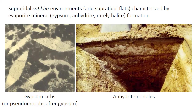Sometimes the supratidal part of a tidal flat can be very evaporative. In arid environments, the supratidal flats are given a special name: sabkha, after the Arabic word for salt flat. A sabkha is characterized by high levels of evaporation, so evaporite minerals like gypsum, anhydrite, or possibly even halite might form. In many cases the original mineral has been dissolved and replaced by calcite, but the characteristic crystal shape may still be preserved — like the lath or blade-shaped gypsum crystals in the left-hand photo. When a crystal retains the shape of the original mineral but has a new chemical composition, it's called a pseudomorph. The left-hand photo shows calcite crystals that are pseudomorphs after gypsum.